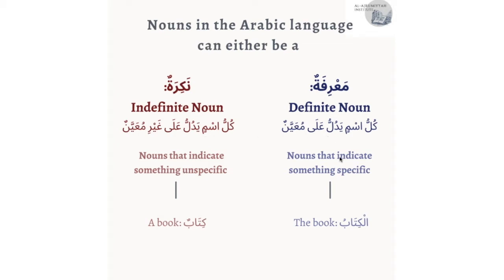What's an example of a noun that indicates something specific? Al-kitabu — al-kitabu means 'the book.' But kitabun means 'a book,' so kitabun is an indefinite noun referring to something not specific, just a random book. While al-kitabu means 'the book' — al in Arabic means 'the.'